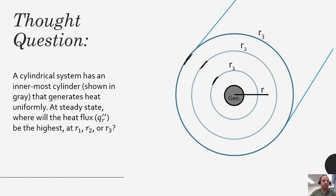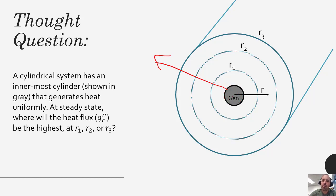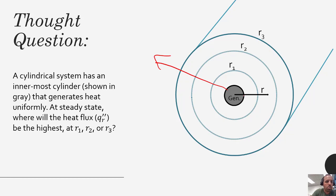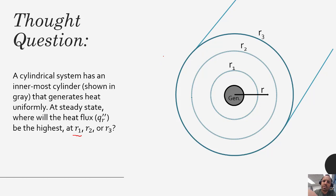Where will the flux be the highest? Heat is being generated in the smallest innermost cylinder, so it's going to be most concentrated there and then less and less concentrated as you go outward. In terms of the specific radii, the flux will be highest at r equals r1 because that corresponds to that same rate of heat transfer distributed over the smallest area. As you go out to r2 or r3, the heat is dissipated — spread out over a larger and larger area normal to the flow of heat.